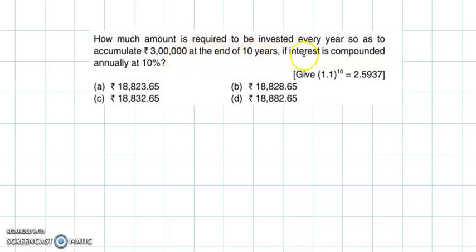the end of 10 years if interest is compounded annually at 10%? So here the accumulated value we need, that is A(n,i) or future value we can say, this is given as rupees 3 lakhs. So 3 lakh is our accumulated amount.